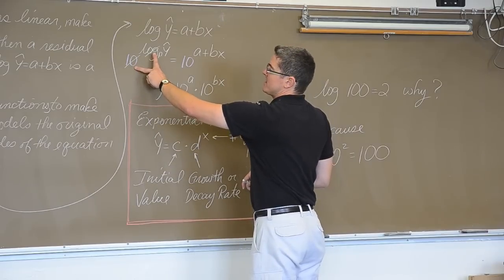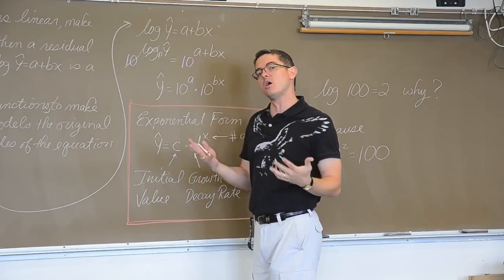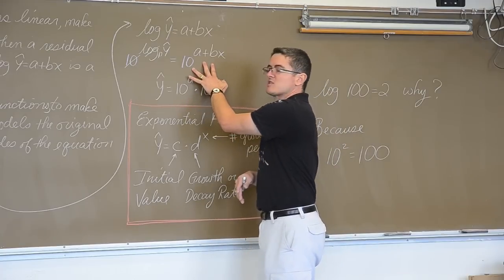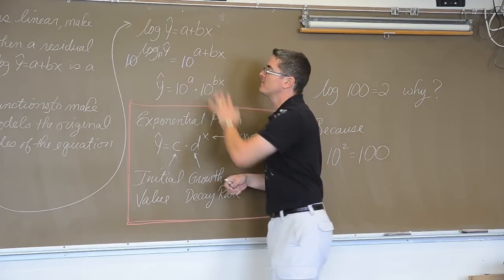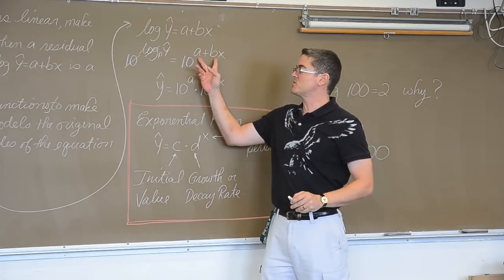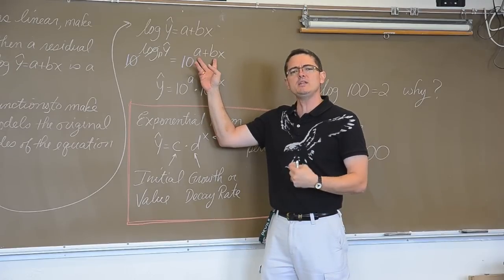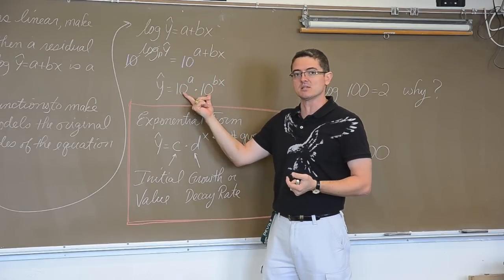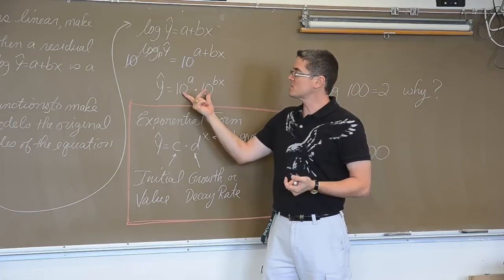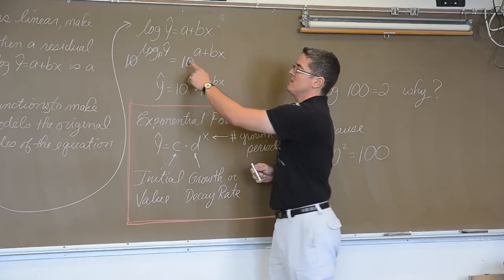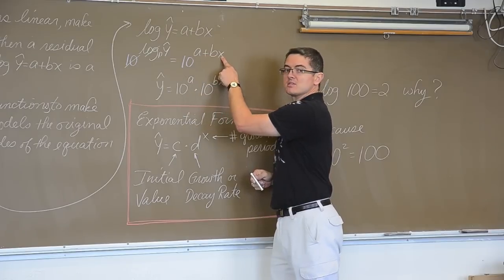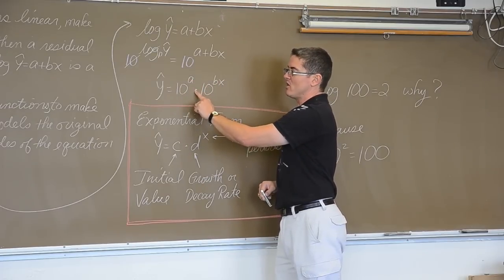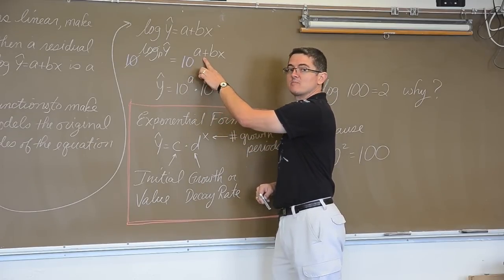So the log base 10 and the base 10 cancel out. The y hat comes down, and now your log is out of the function. On the right hand side, I'm going to make this look like the exponential form that you'll find in your textbook. This is 10 raised to two terms being added together. Well, when do you add exponents? You add exponents when you're multiplying like bases. Okay, so that means that 10 to the a plus bx is the same as 10 to the a times 10 to the bx. Remember, when you multiply like bases, you add the exponents.